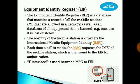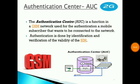The Equipment Identity Register (EIR) is a database that contains a record of all mobile stations allowed in the network, as well as a database of equipment that is banned — for example, stolen or lost devices. The identity of the mobile station is given by the International Mobile Equipment Identity (IMEI). Each time a call is made, the MSC requests the IMEI of the mobile station, which is then sent to the EIR for authorization. The F interface is used between MSC and EIR.